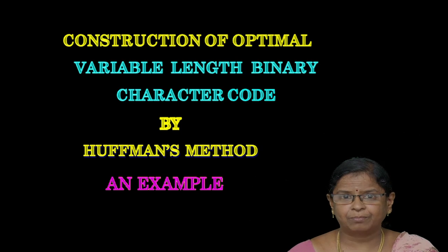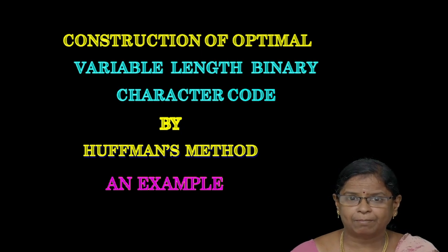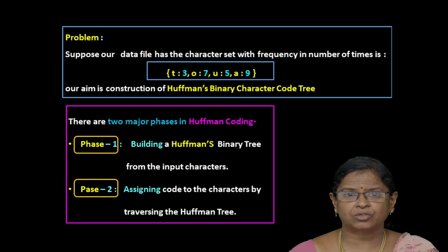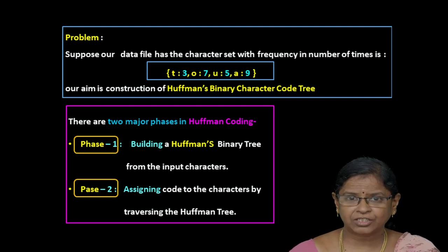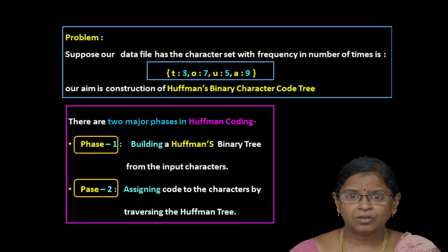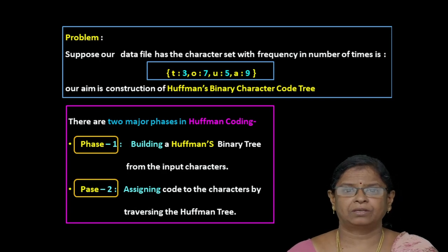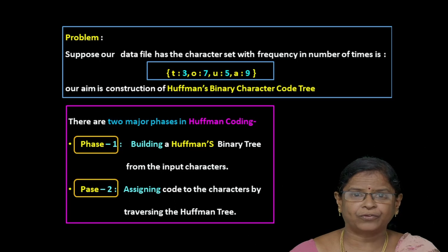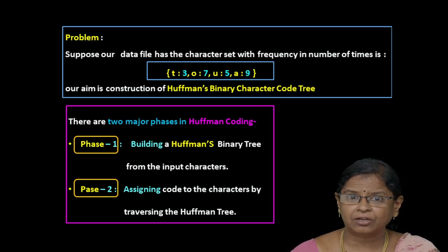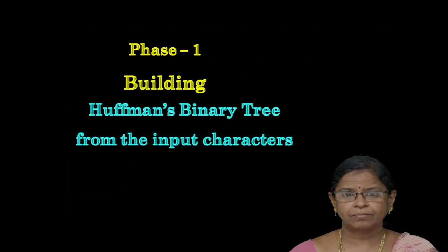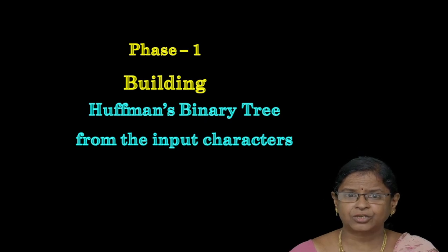Now we will see an example which constructs a Huffman tree, and when we traverse it, we obtain the optimal binary character code. The problem consists of four characters in a text file: T with frequency 3, O with frequency 7, U with frequency 5, and A with frequency 9. This procedure consists of two phases. In the first phase, we construct the Huffman tree. In the second phase, we traverse the Huffman tree to obtain the optimal binary character code for each character.